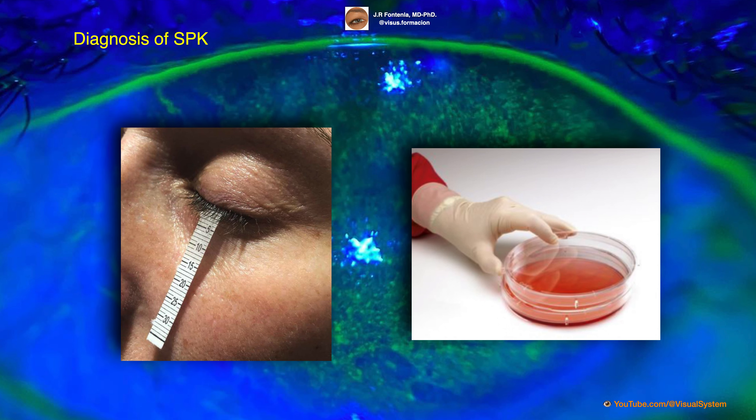Additional tests may be performed to determine the underlying cause of superficial punctate keratitis, such as a Schirmer test to measure tear production, or a culture to identify any bacterial or viral infections.